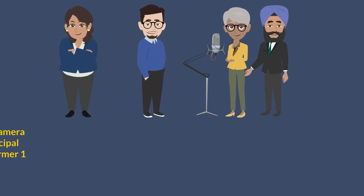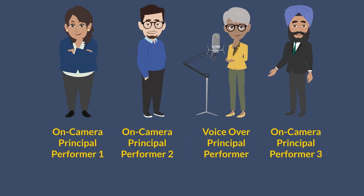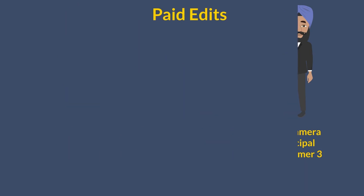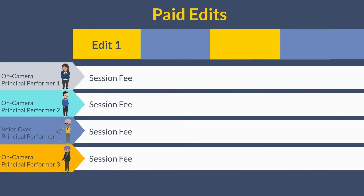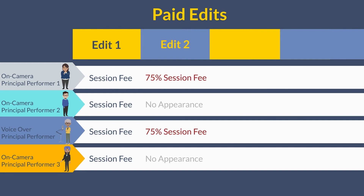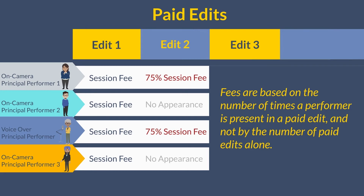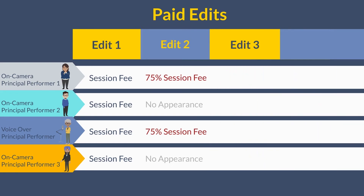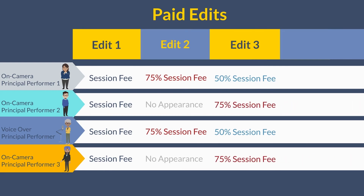Now let's look at an example of how paid edits work for performers. Imagine we're using the same 30-second commercial example, but this time we have that product change. If all of the performers appear in the first edit, a session fee is triggered for all. But if a setting change occurs in the second edit and only on-camera one and VO performers appear, those two are paid 75% of the session fee. But now the same commercial is adjusted in post-production to change the season from spring to fall and all three on-camera performers are shown in different wardrobe. Session fees were paid to performers to shoot the change at the time of production. Fees are based on the number of times a performer is present in a paid edit. This means the on-camera one and VO performers receive 50% of a session fee, while on-camera two and on-camera three receive 75% of the session fee because this is only their second appearance in a paid edit. Any additional paid edits after the third triggers a payment of 30% of the session fee.